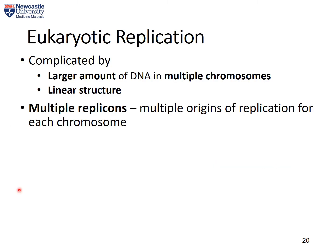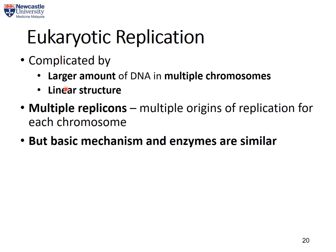How about DNA replication in eukaryotes? It is more complicated as it contains a larger amount of DNA in multiple chromosomes, and those chromosomes are in a linear structure compared to the circular structure in prokaryotes. To address this, eukaryotes have multiple origins of replication so that each region can replicate itself. Overall, the basic mechanism and the enzymes are similar in both prokaryotes and eukaryotes.